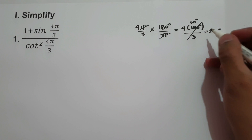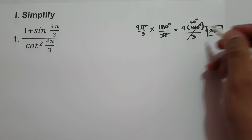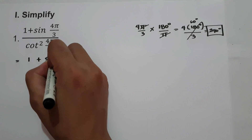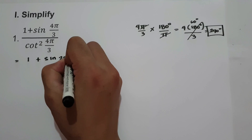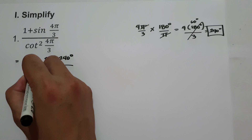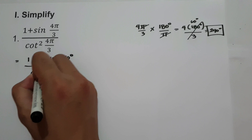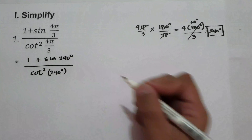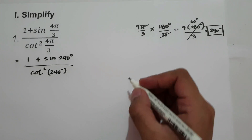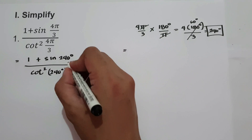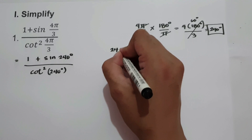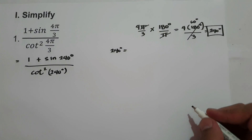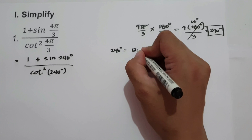So let us substitute this into the given expression. We have 1 plus sine 240 degrees, over cotangent squared 240 degrees. To simplify, let us find the reference angle of 240 degrees. 240 degrees is located in quadrant 3.